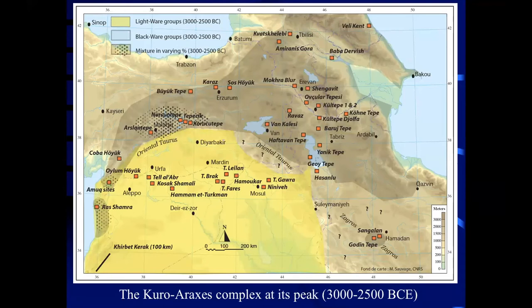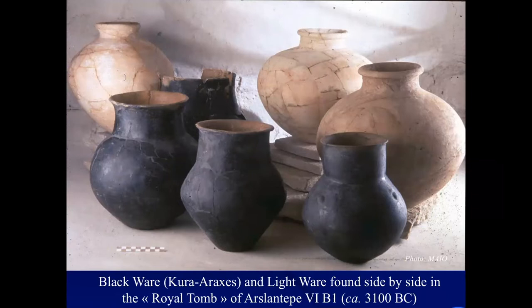If we consider the Kura-Araxes complex as a whole in its wider context, we may first note that this complex, whose hallmark is mainly a black burnished pottery repertoire, extends at its peak over a very wide, mostly mountainous area that ranges from the Caspian Sea to the Mediterranean Sea. This area covers a range of very different landscapes, and it borders a vast region mainly characterized by lowlands, and mostly peopled by lightware-crafting groups.